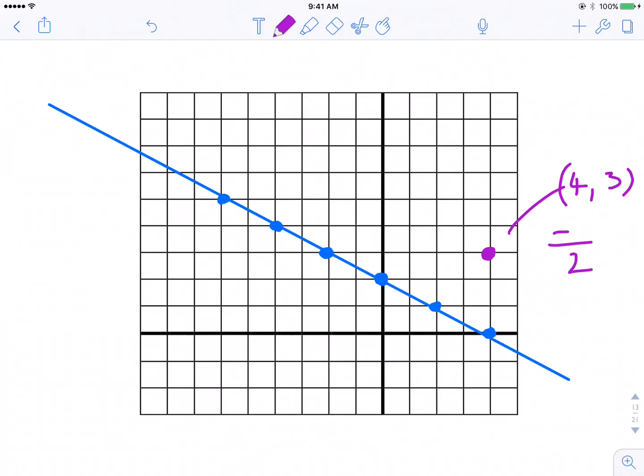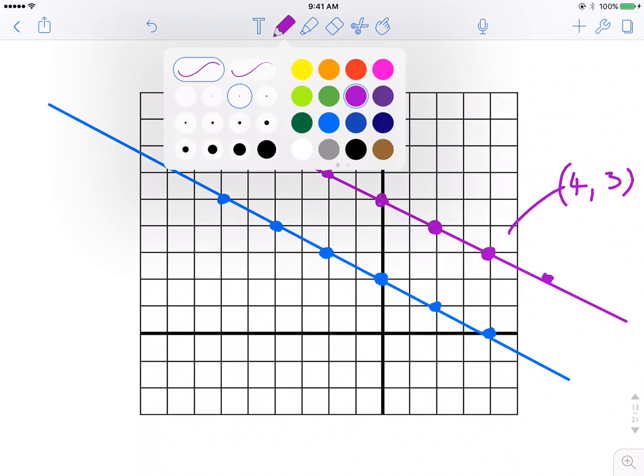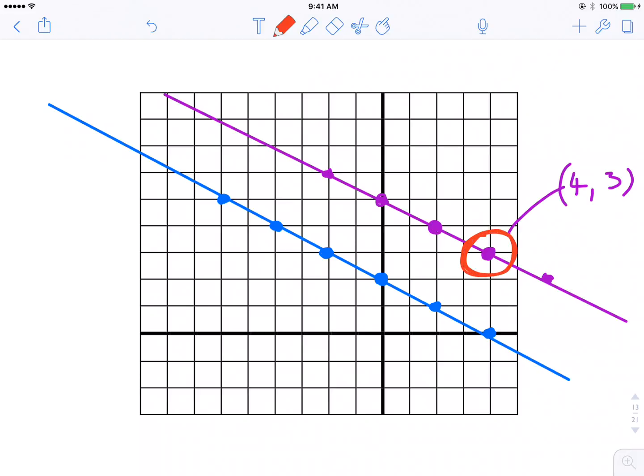So from there, I would count down 1 and over 2, which takes me off the graph. But again, like I said, I could always count up 1 and left 2. There, and there, and there. And now, I have a graphical representation of a line that's parallel to our first line, although my line doesn't look parallel, don't mind that. Parallel to our first line, but passing through the point (4, 3), right there.